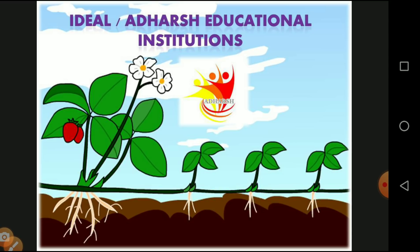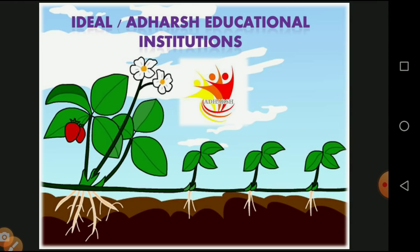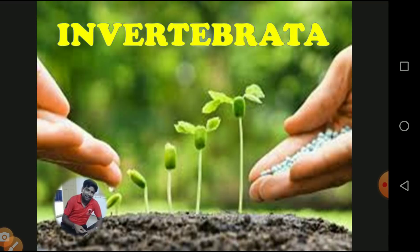As a continuation of the animal kingdom, we have seen some basic ideas regarding the phyla — what phyla are available, how they are classified, what special and general characters are available for each type of phylum, and some basic examples. Today's topic is about Invertebrata.